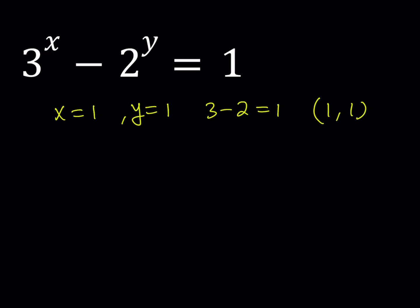And then there's another solution. If you think about powers of 3 and powers of 2, we have 9 minus 8 which is also 1. So that means if x equals 2 and y equals 3, we get 9 minus 8 equals 1, which means 2 comma 3 is another solution. These are somewhat obvious solutions.